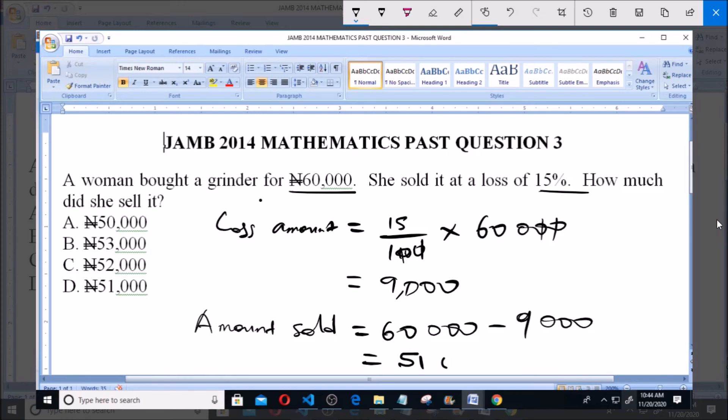51,000 naira, which is option D. She sold it for 51,000 naira. Thank you, and ensure you subscribe to the channel for more videos on past questions.